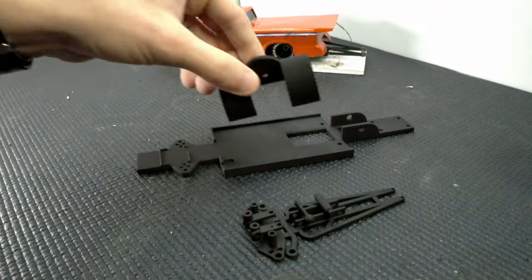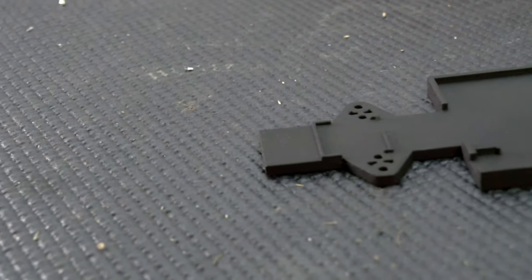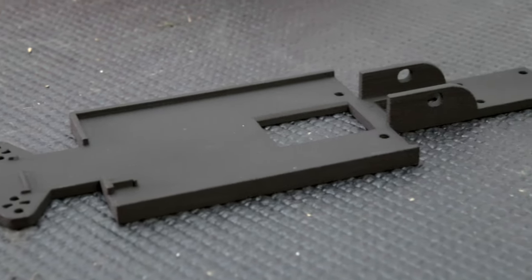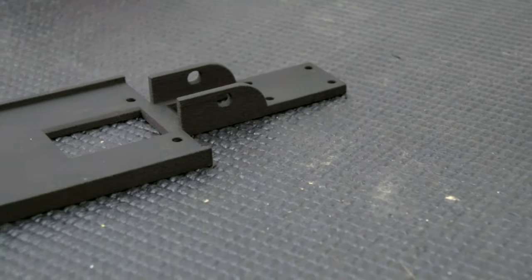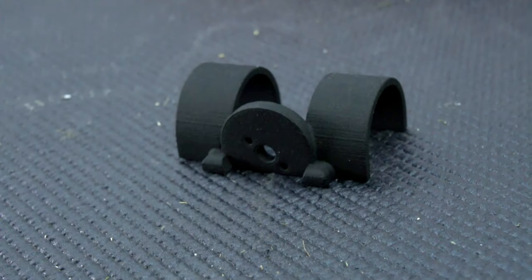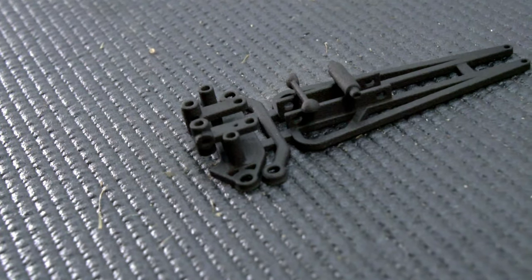You'll need to grab the main chassis, motor plate, and micro drag parts off of my Shapeways store. I'll have a link to it in the description. I'll also leave links to the rest of the parts you'll need and we'll cover them as we're building.